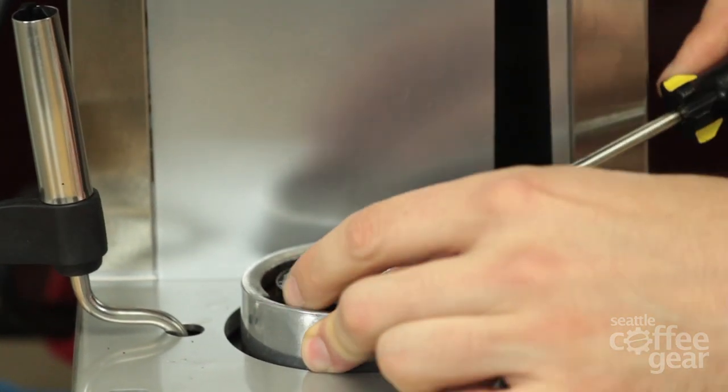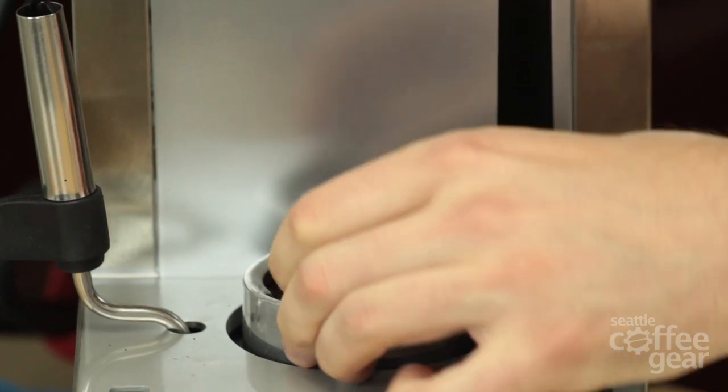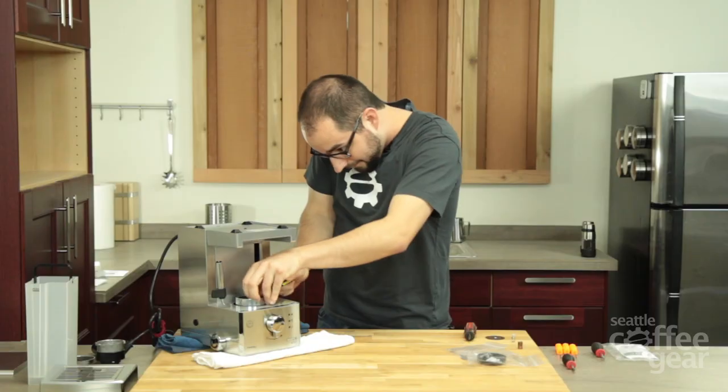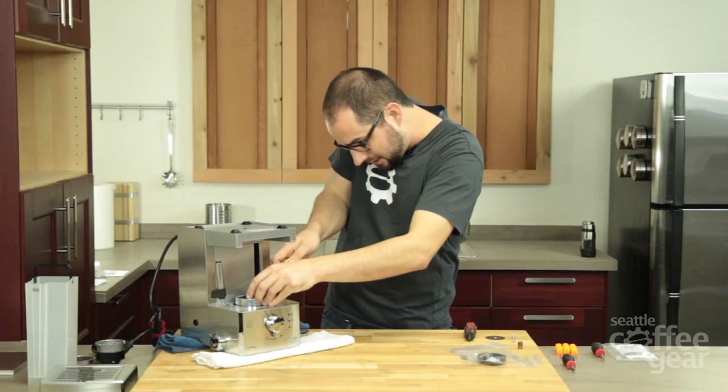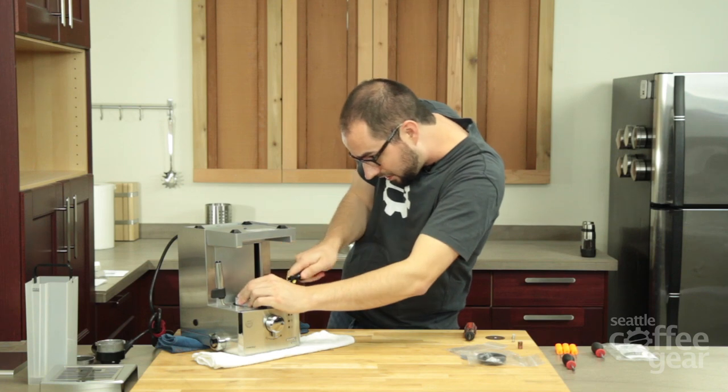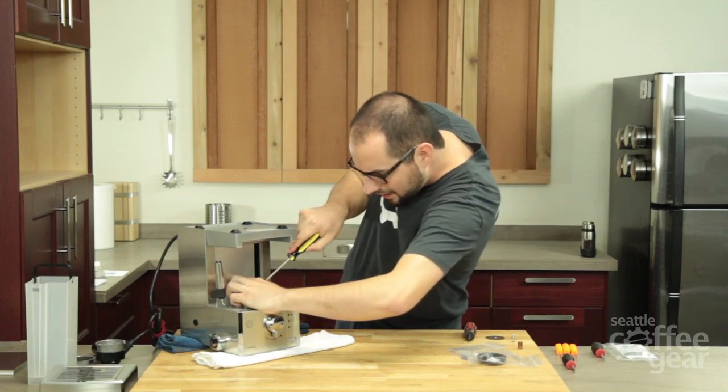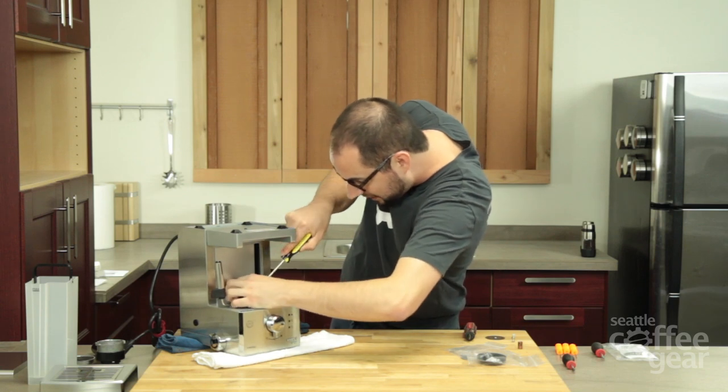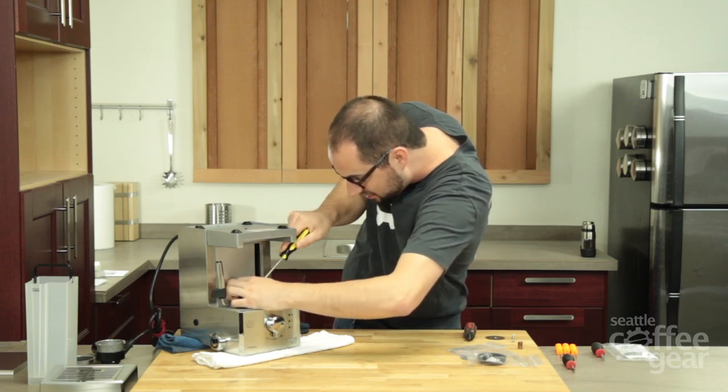And obviously, since we're replacing this part, we're not too worried about the condition of it after we remove it. So we're just going to work at it and get it out. You're going to find different ways at home that make it easy to get out. Sometimes I like working on the outside edge. I've heard from technicians here they like working on the inside edge.